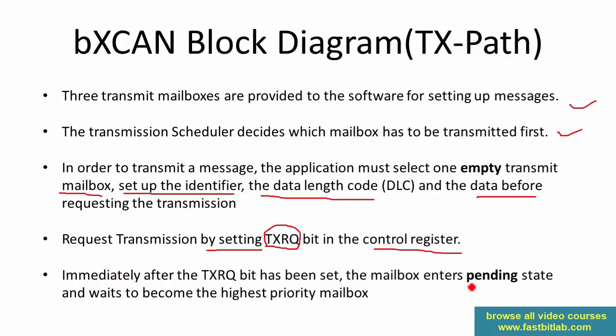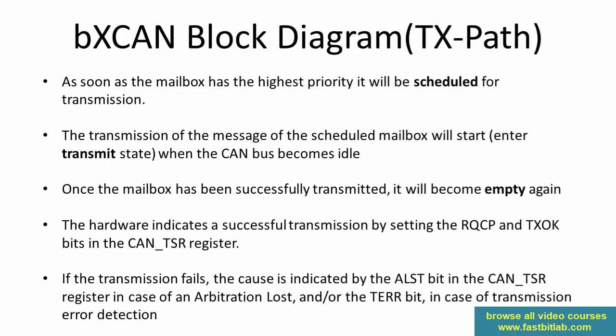Immediately after the TXRQ bit has been set, the mailbox enters pending state and waits to become the highest priority mailbox. The moment you request transmission on a mailbox, it will not transmit immediately — it will send that mailbox to pending state, where it waits until it becomes the highest priority one. As soon as the mailbox has the highest priority, it will be scheduled for transmission.